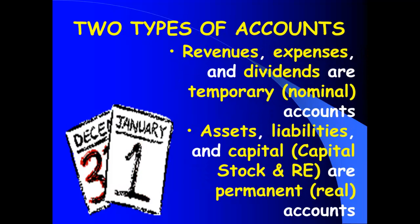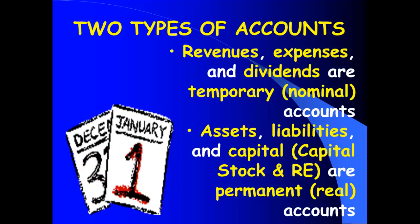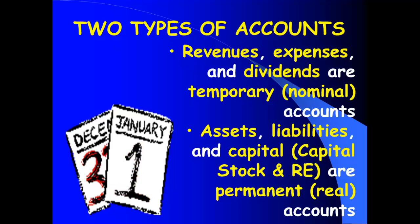To understand closing entries, you need to know that we have two types of accounts. We have nominal or temporary accounts that we will close out, and we have real or permanent accounts that we will not close out. The accounts that we will close out — my nominal or temporary accounts — are my revenues, my expenses, and my dividends. They should end each accounting period with a zero balance so they start the next period with a zero.